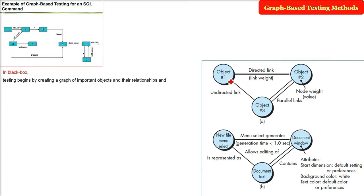In black box testing, the testing begins by creating a graph of important objects and their relationship. In white box testing, we were doing the same thing. We used to find out the cyclomatic complexity, the independent path and the basic path testing and then it is applied. This is how the test cases are generated.